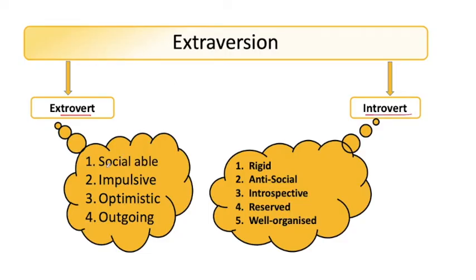Extrovert ki jo personality unhone define ki — ki person social level hoga, impulsive hoga, optimistic hoga, aur outgoing hoga. Introvert mein unhone define kiya ki woh rigid hoga, antisocial hoga, introspective — yaani ki apne hi andar apna behavior analysis karega — reserved hoga, aur well organized hoga. Toh yeh ho gaya extraversion dimension jo unhone define kiya. Is mein do tarah ke personality types nikle — extrovert and introvert.